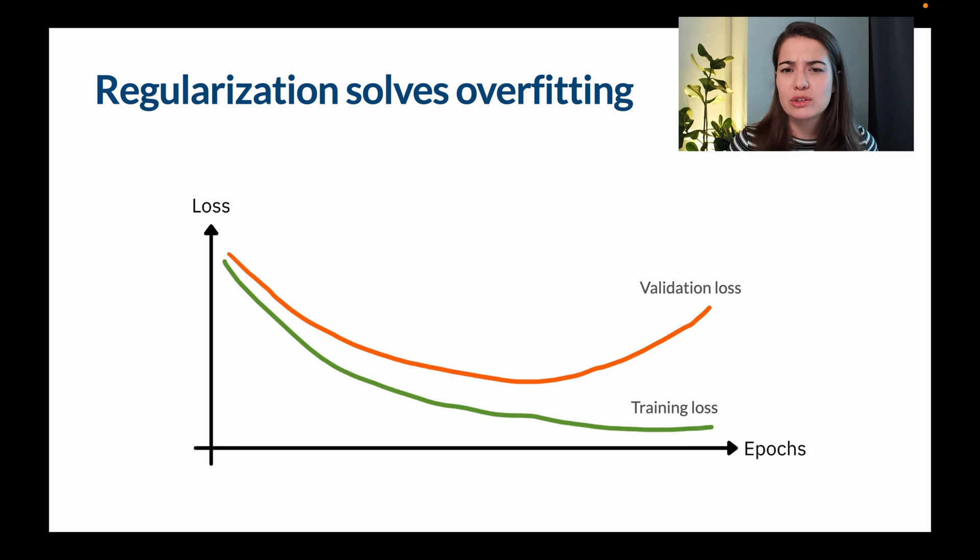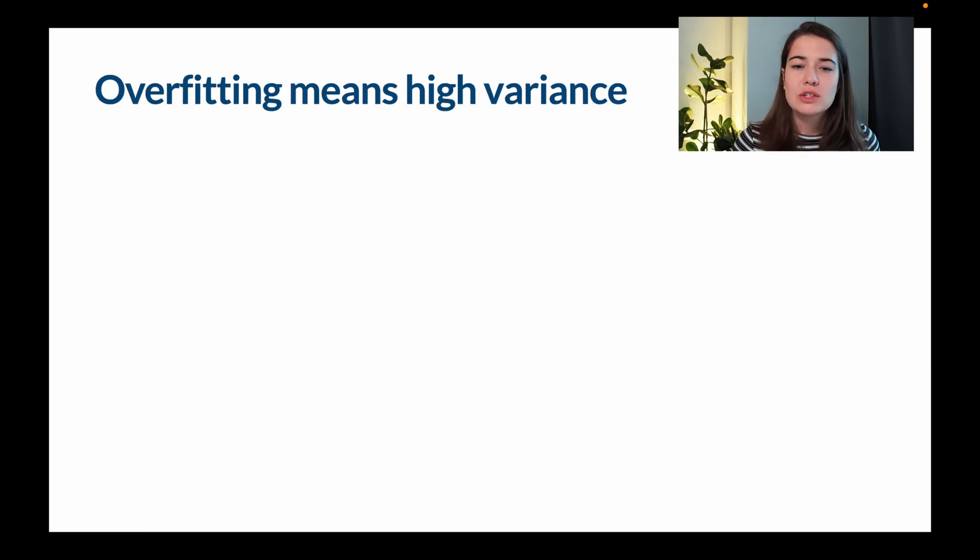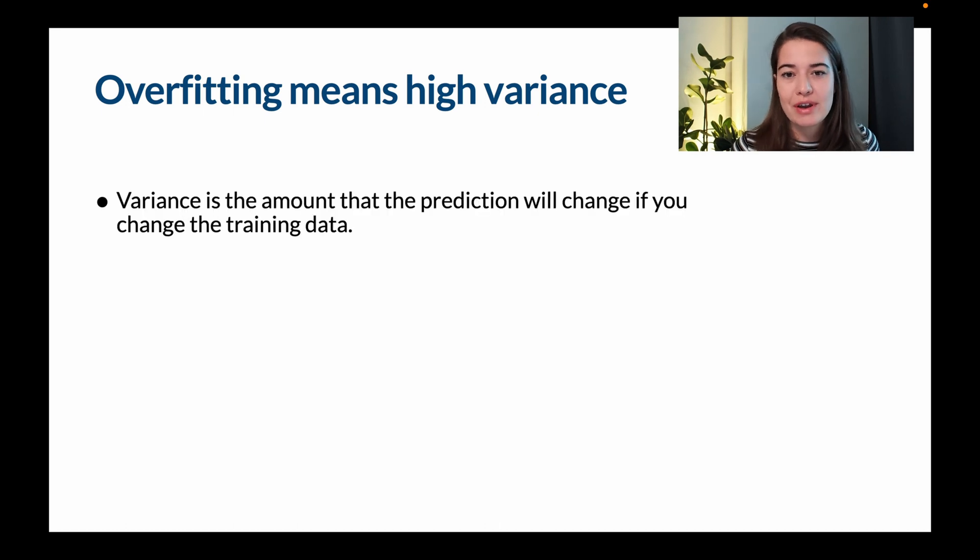But how can regularization solve this? So let's take one step back and understand what happens when your model is overfitting. When your model is overfitting, it means that your model has high variance. Let's remember what variance is. It is basically how much your predictions will change on your model if the training data that you're training your model with changes a little bit. So that is how sensitive is your model on the training data that you're giving it.